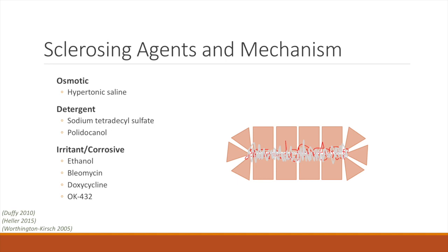Osmotic agents cause cell dehydration and cell wall destruction. Because they are rapidly diluted, their effect is highly localized. Hypertonic saline is an osmotic agent that has been in use as a sclerosant since the 1920s. The major drawbacks for hypertonic saline are pain upon injection as well as a potential for extensive tissue necrosis if it extravasates.